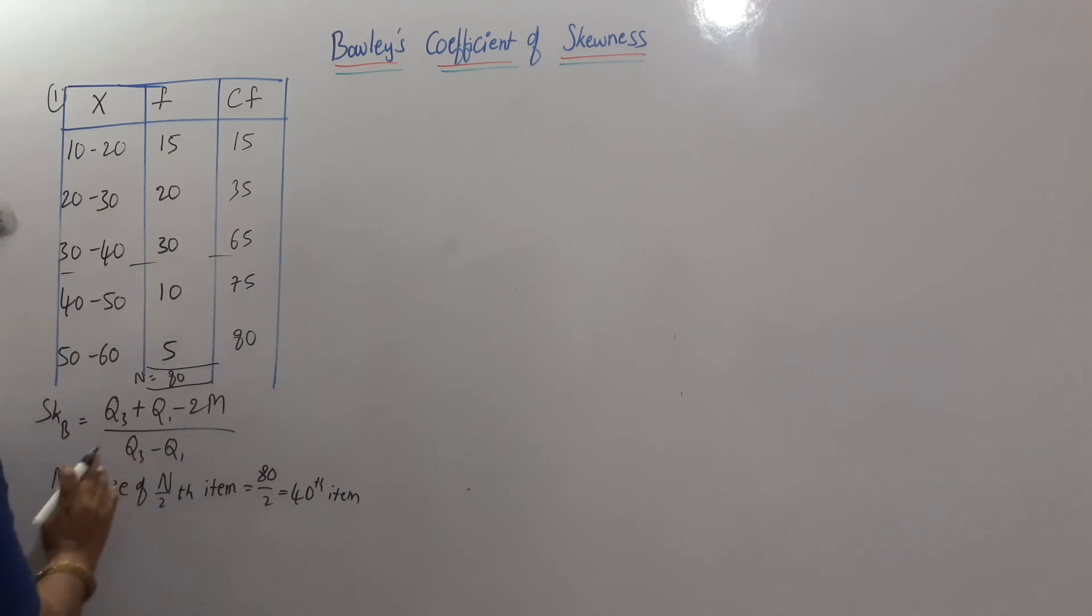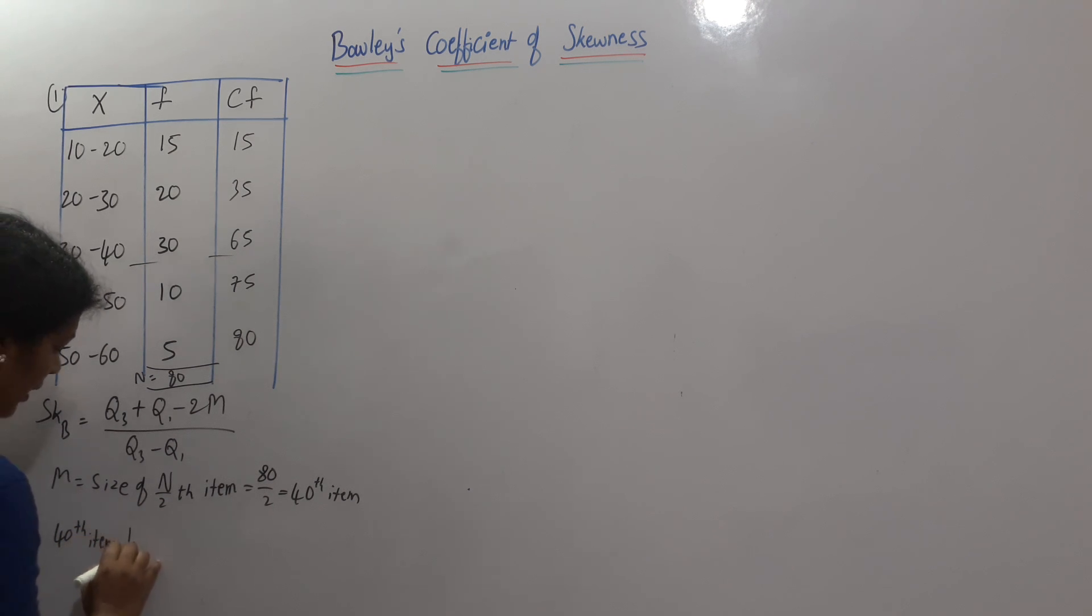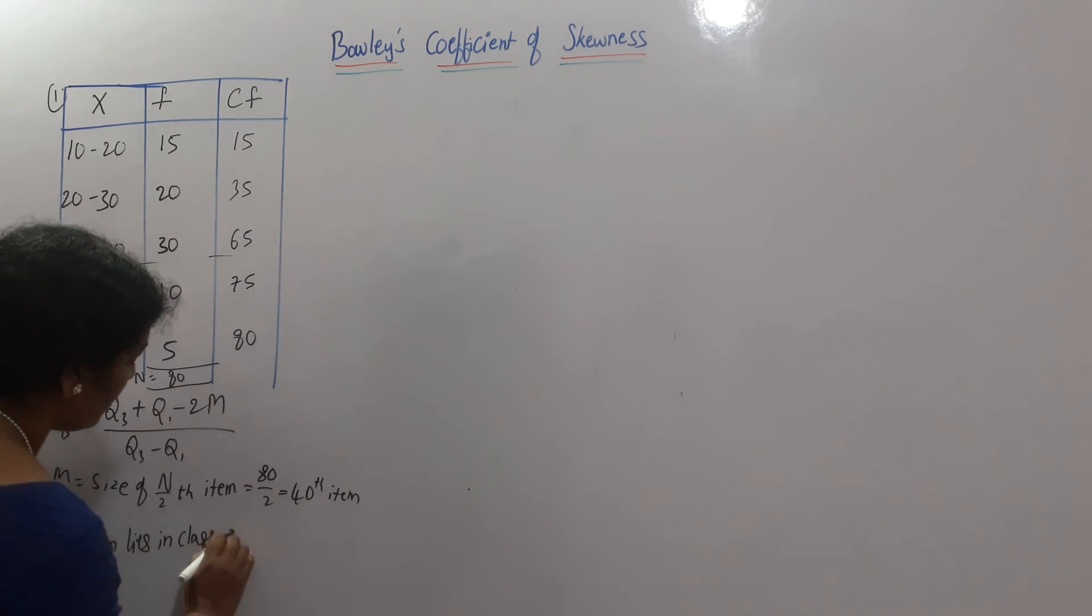40th item means it lies here. So, it means 40th item. We can write one sentence here. 40th item lies in class 30 to 40.